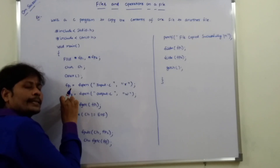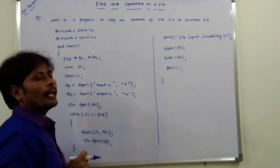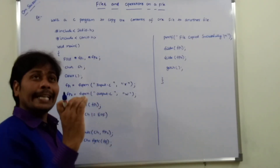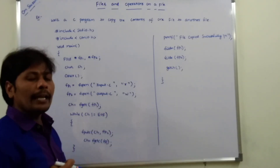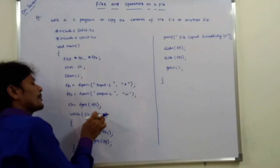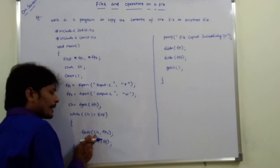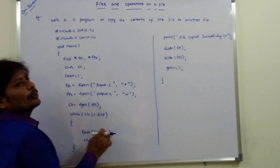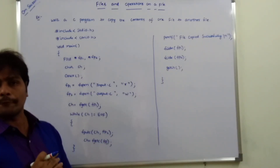Whatever character is read from input.c, we first check if the given character is EOF or not. EOF is nothing but end of file. If the reading character is end of file, then we print file copied successfully. Otherwise, that character is written into the output file pointed by file pointer fp2 using the fputc function.